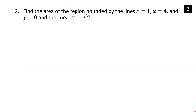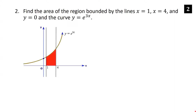Find the area of the region bounded by the lines x equals 1, x equals 4, and y equals 0, and the curve y equals e to the 3x. Here we have x equals 1 and x equals 4 as the two vertical lines, y equals 0 is the x-axis, and here's the curve y equals e to the 3x.